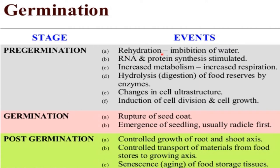In case of pre-germination, first the rehydration takes place — that is imbibition of water. RNA and protein synthesis is stimulated, increased metabolism that is increased respiration takes place, then hydrolysis of reserve food material by enzymes, then change in cell ultrastructure, and then induction of cell division and cell growth.